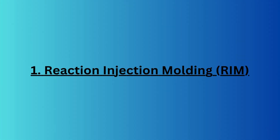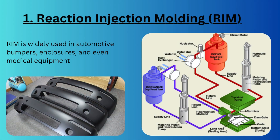First, we have Reaction Injection Molding, generally called RIM. Unlike conventional injection molding, RIM uses two liquid reactants — polyol and isocyanate — which mix together and chemically react inside the mold to form a polymer, producing lightweight, strong, and excellent impact resistance components.